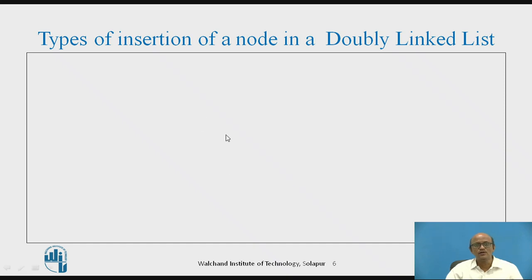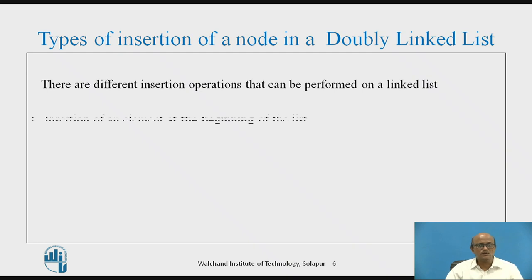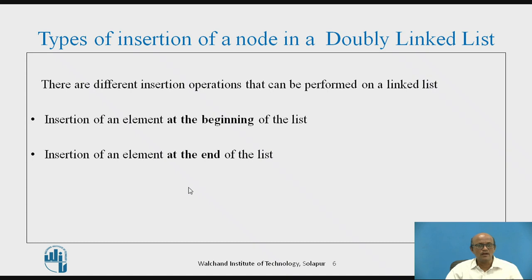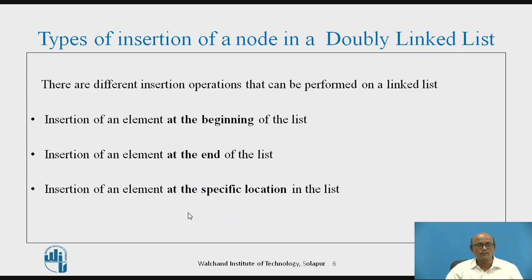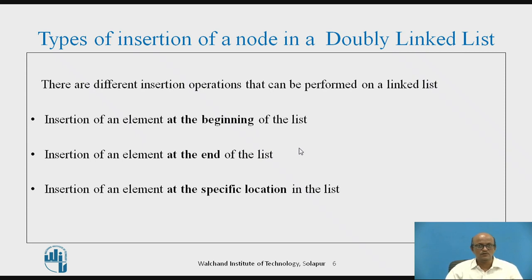Now let us look at the types of insertion of a node in a doubly linked list. There are three types: insertion can be made at the beginning of the list, insertion can be made at the end of the list, and insertion can be made at a specific location in the doubly linked list. Today we will see insertion of a node at the beginning of the list, and the algorithm and code in the next slides.